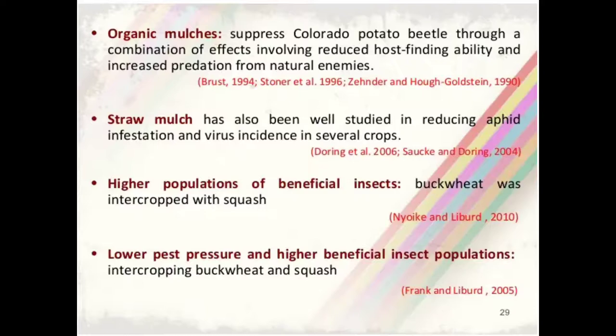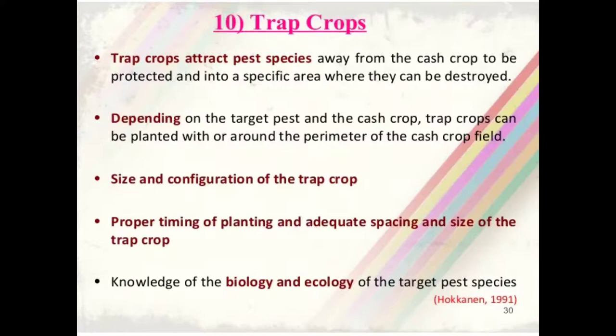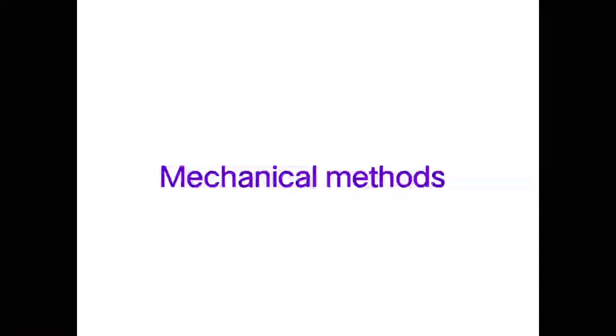The next cultural practice is the trap crop, which attracts pest species away from the cash crop to be protected into a specific area where they can be destroyed. Depending on the target pest and the cash crop, trap crops can be planted within or around the perimeter of the cash crop field. The size and configuration of the trap crop, proper timing of planting, adequate spacing, and knowledge of the biology and ecology of the target pest species are all important considerations.